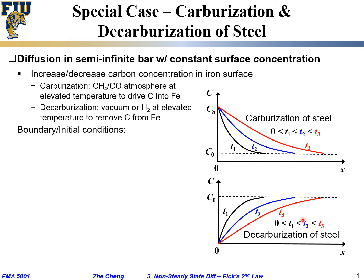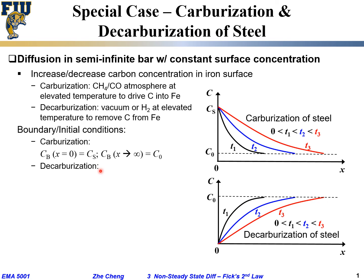The solution is similar to what we have done before. The boundary conditions are: for carburization, as x goes to infinity, the concentration stays at C0; at the surface, it is fixed at Cs. For decarburization, when it is very deep, the concentration stays at C0; at the surface, because we are removing carbon, we assume the concentration drops to zero. These are the respective boundary conditions for each case.